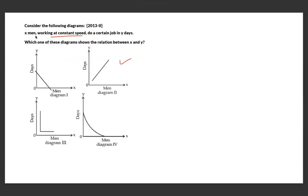The question states that x men working at constant speed complete a job in y days, and asks which diagram represents the relationship between x and y. Since speed is constant, the relationship produces a steadily upward-sloping curve at a constant rate — that shape represents the correct answer.